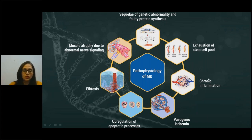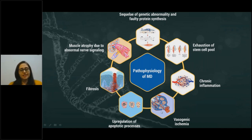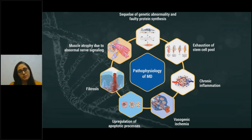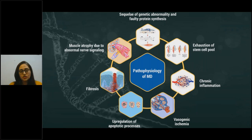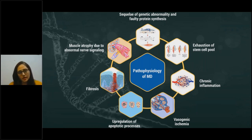Chronic inflammation also contributes to lack of blood supply through something called vasogenic ischemia. The muscles in the body — largely skeletal muscles — are affected, and some studies suggest that muscles present in blood vessels can also be impaired by the dystrophic process. Because of this, blood supply becomes sluggish in these children's blood vessels, leading to vasogenic ischemia — lack of blood supply due to abnormality in the blood vessels themselves.